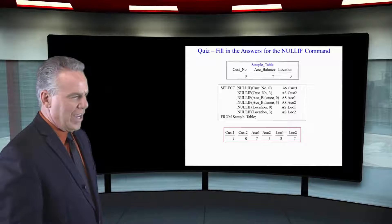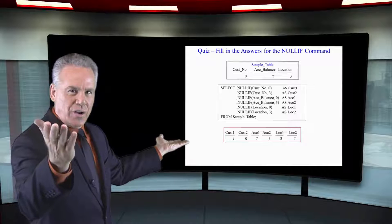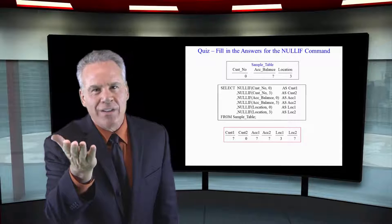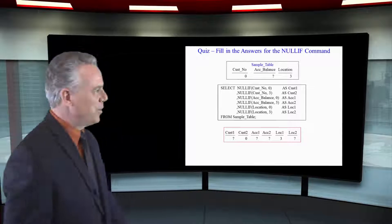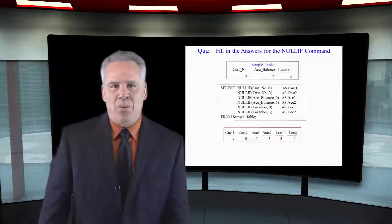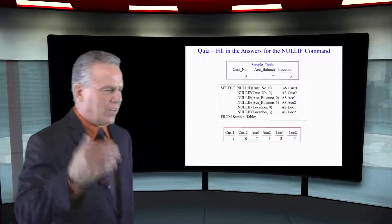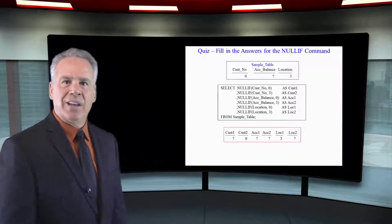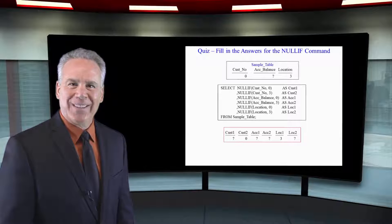Then we get to the location and we say NULLIF location, zero. The location's not a zero, so leave it as is — it comes back a three. And lastly, we say NULLIF location, three. It is a three, so make it a null.